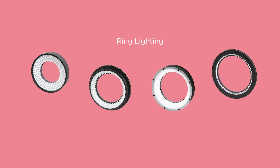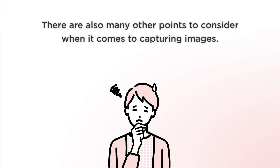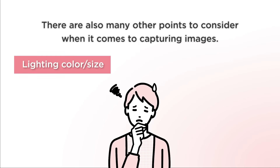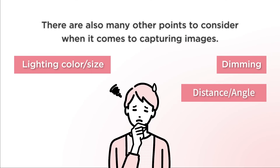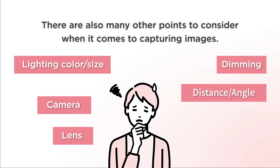We have explained how to choose a ring light, but there are also many other points to consider when it comes to capturing images: lighting color, size, dimming, lighting distance, angle, and camera and lens selection.